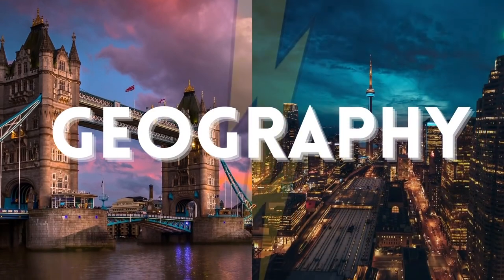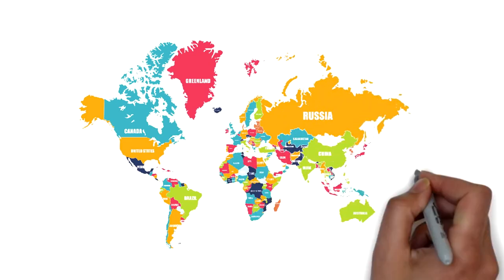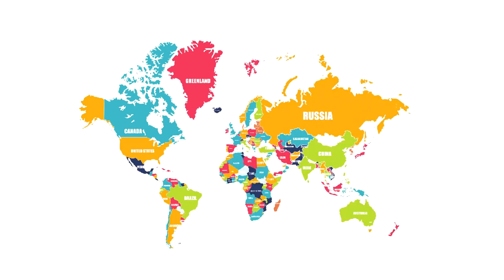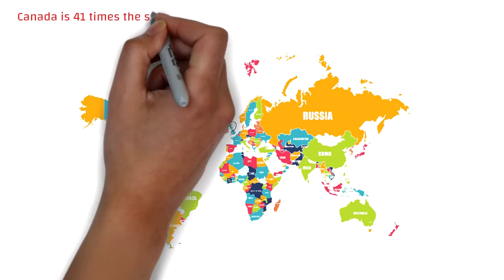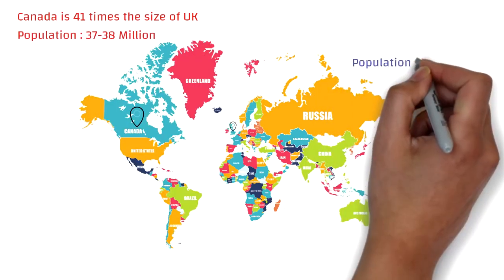Let's start with the geography — we'll cover the key points to keep this interesting. Looking at the world map, UK is located in Europe and Canada is over in North America. Clearly, UK is very small in comparison to Canada. Canada is actually 41 times the size of UK, but interestingly its population is close to half — Canada's population is around 37 to 38 million while the UK's is around 66 to 67 million.